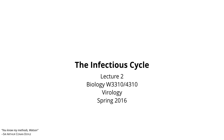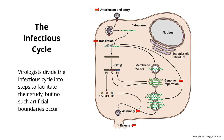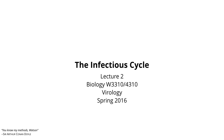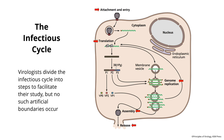I want to start getting into the nuts and bolts of the viral infectious cycle. Today we're going to talk about, in general terms, what happens when a virus enters a cell. Remember, viruses need to get into the cells in order to reproduce, and this is called the infectious cycle. That's what we call what goes on in a cell when a virus gets in there.